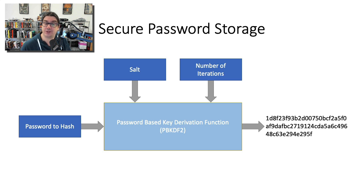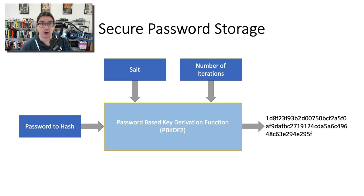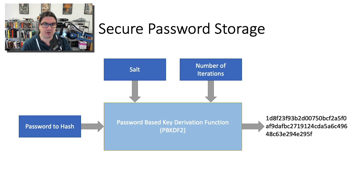So if you pass in 10, that password gets hashed 10 times. If you pass in 50,000, it gets hashed 50,000 times. In .NET we have a class built into the library to do this. But it doesn't matter if you're using .NET, Ruby, Python, Java, or any other language — they're all going to have either an implementation of PBKDF2 or something similar, such as bcrypt, which internally uses a different algorithm but is fundamentally the same theory.